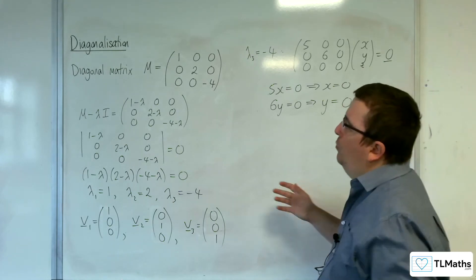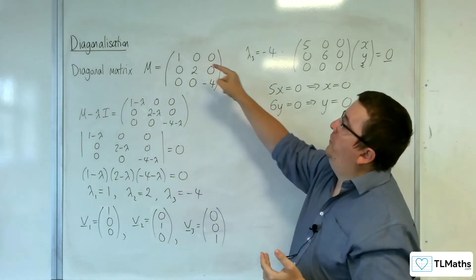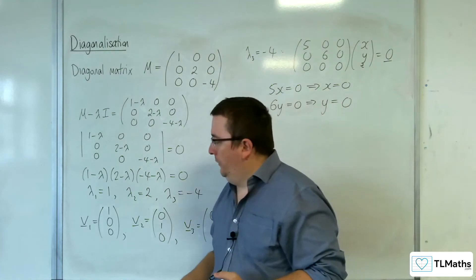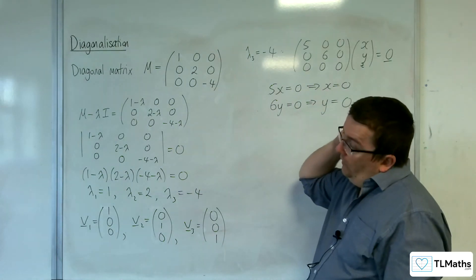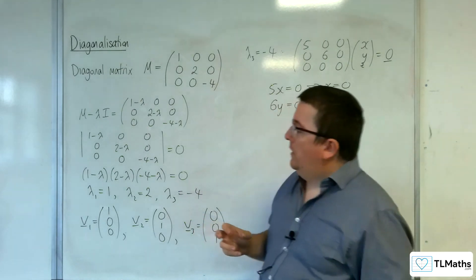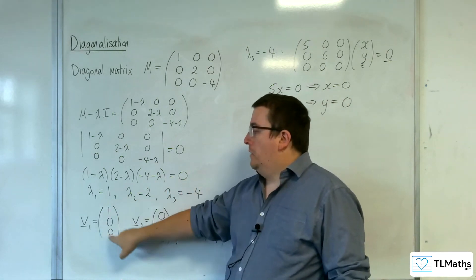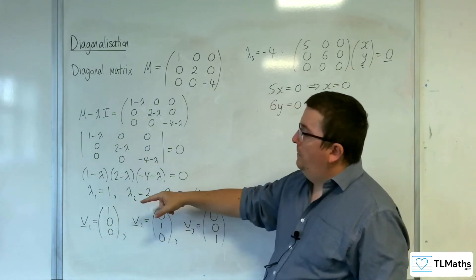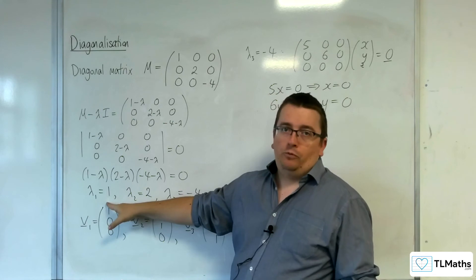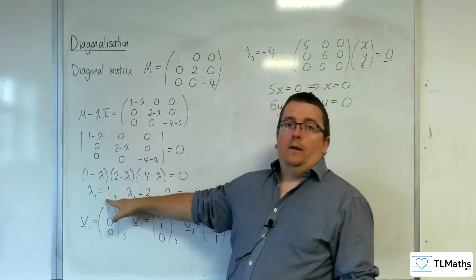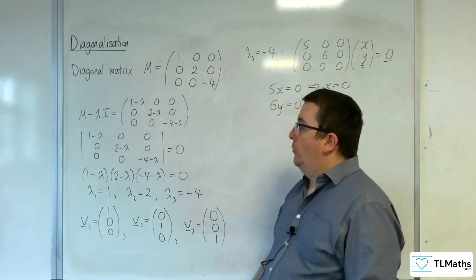For this diagonal matrix, the eigenvalues pop out straight in front of us: 1, 2, -4. The eigenvectors are the base vectors in our three directions. Going along the x-axis, we've got a line of invariant points — any point on the x-axis remains precisely where it is, because lambda is 1 and its coordinates are being multiplied by 1.